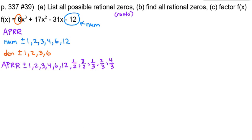Now take all numerators over 6: 1/6 is new; 2/6, 3/6, 6/6, and 12/6 we already have; 4/6 is also considered. So this is our APRR list — that was part A. Part B is to find all rational zeros, so now we're actually going to find the roots, and this is where the chart comes in.